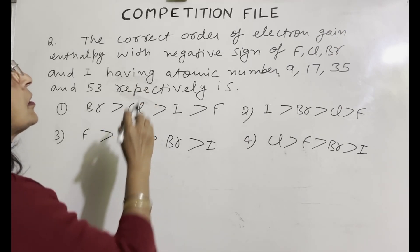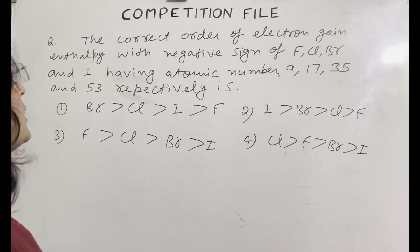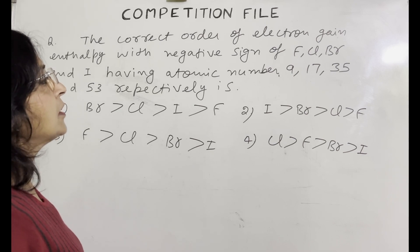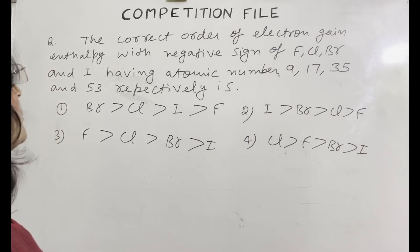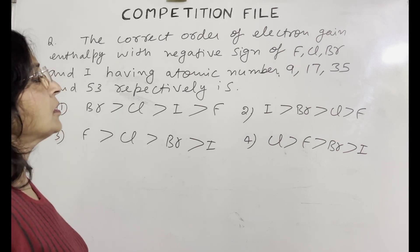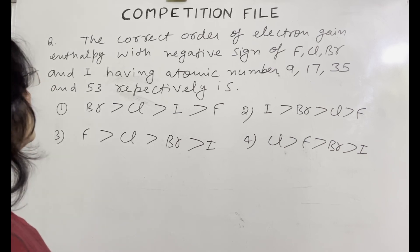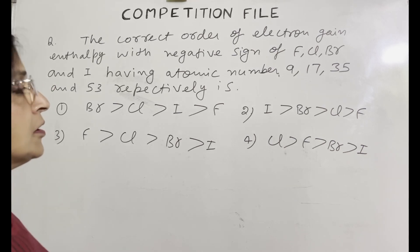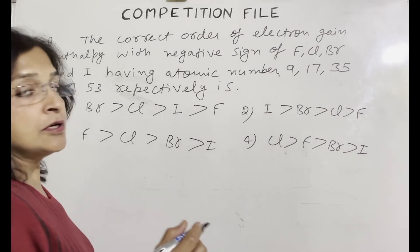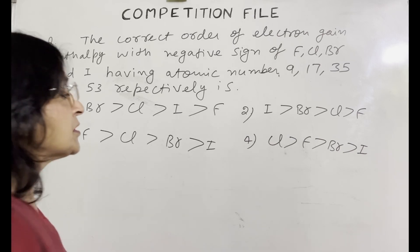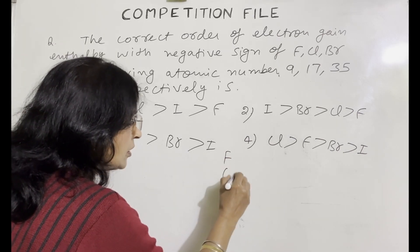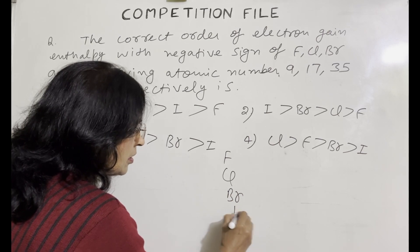Next question is, the correct order of electron gain enthalpy with negative sign of fluorine, chlorine, bromine and iodine having atomic number 9, 17, 35 and 53 respectively is. So all are halogens, group 17 elements, fluorine, chlorine, bromine, iodine.